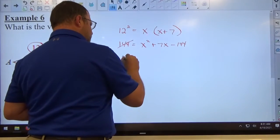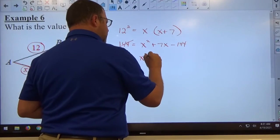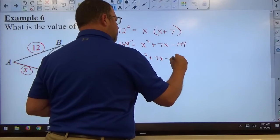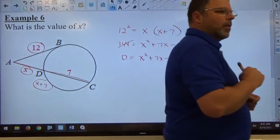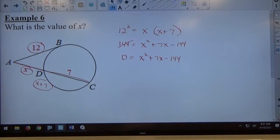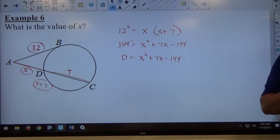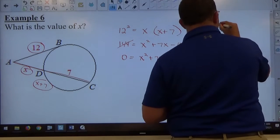That gets me 0 equals x squared plus 7x minus 144. To solve a quadratic equation by factoring, which is what we should try to do first, we look for factors of negative 144. We want those factors to add up to positive 7 to get the entire list.